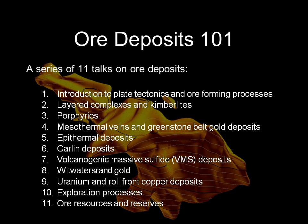We will also briefly discuss iron oxide copper gold deposits, or IOCGs, such as the giant Olympic Dam deposit in South Australia. The fourth talk will deal with vein deposits that form deep in the crust and host gold and copper. Most prolific of these are those found in the ancient greenstone belts, which provide a significant proportion of the world's gold production.